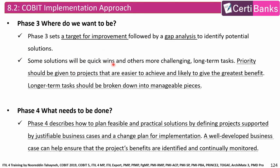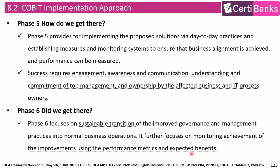Some solutions will be quick wins and others more challenging or long-term tasks. In general, priority should be given to projects that are easier to achieve and likely to give the greatest benefit. Longer-term tasks should be broken down into manageable pieces. Phase four — what needs to be done? — describes how to plan feasible and practical solutions by defining a project supported by justifiable business cases and a change plan for implementation. A well-developed business case helps ensure that the project's benefits are identified and continually monitored. Phase five — how do we get there? — provides for implementing the proposed solutions via day-to-day practices and establishing measures and monitoring systems to ensure that business alignment is achieved and performance can be measured.